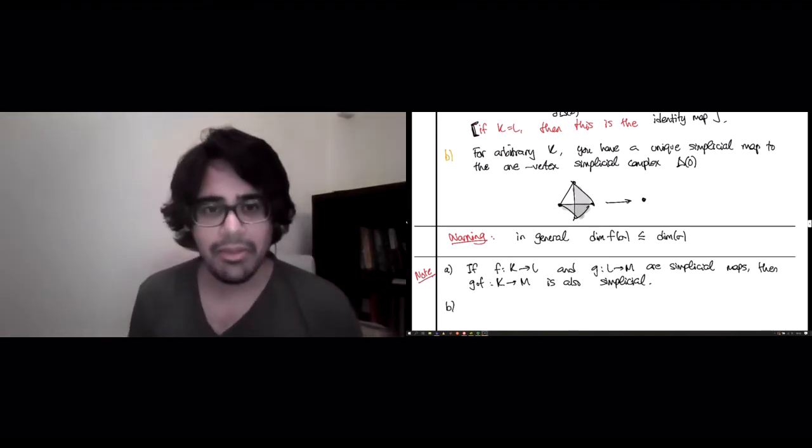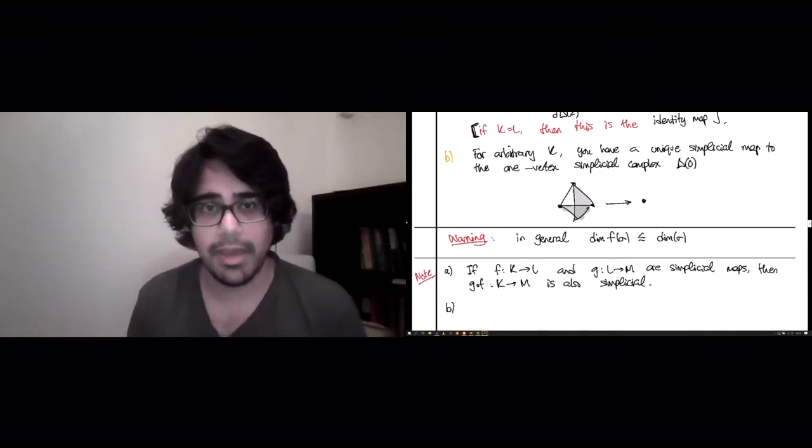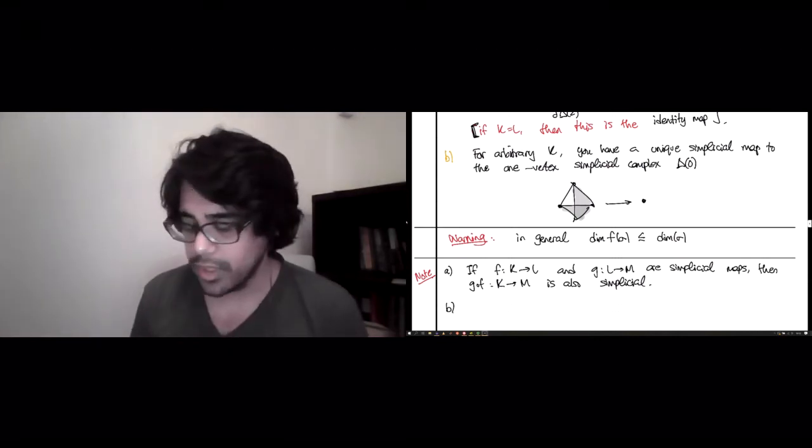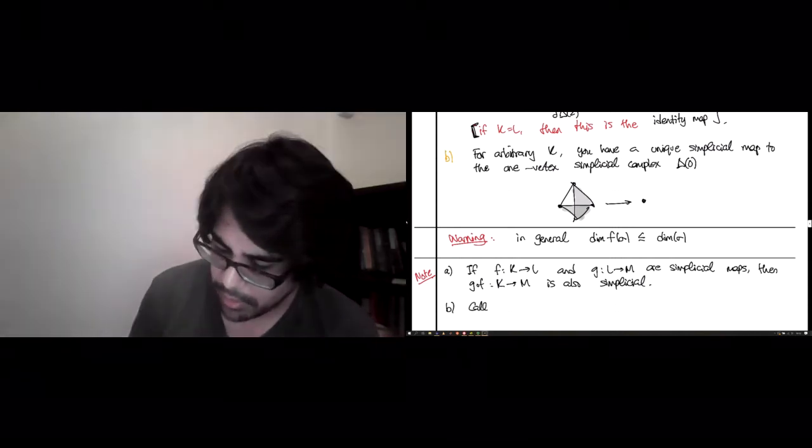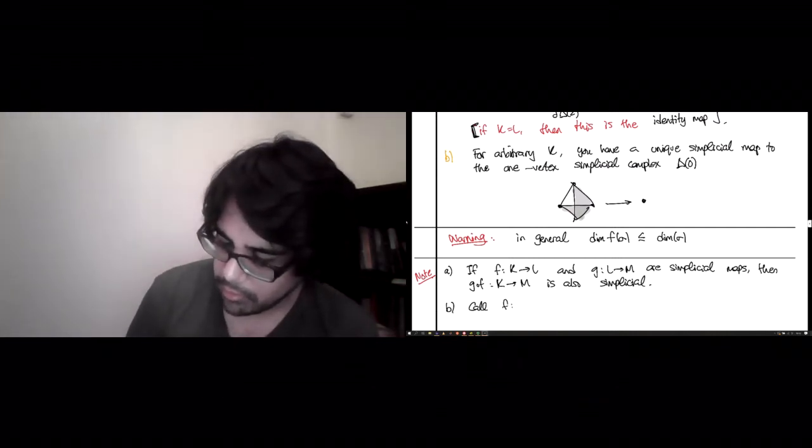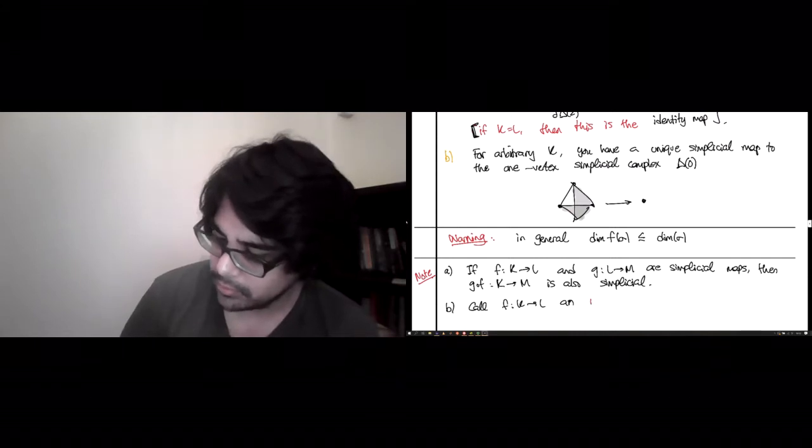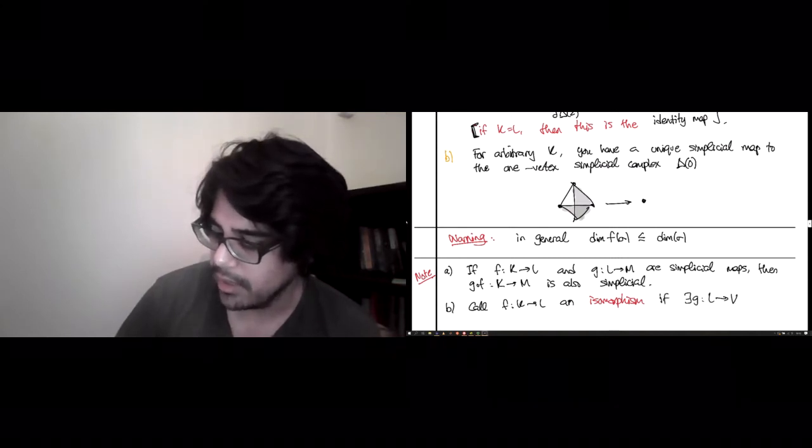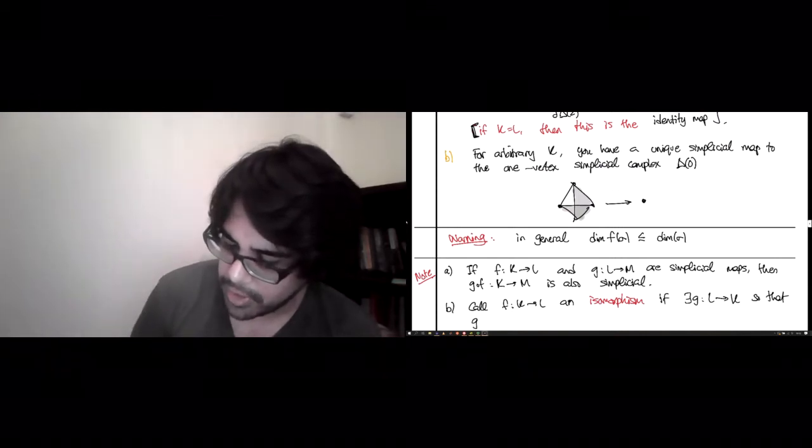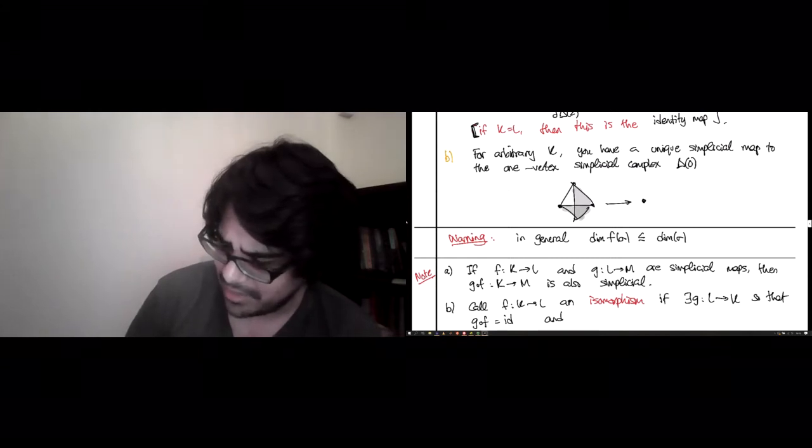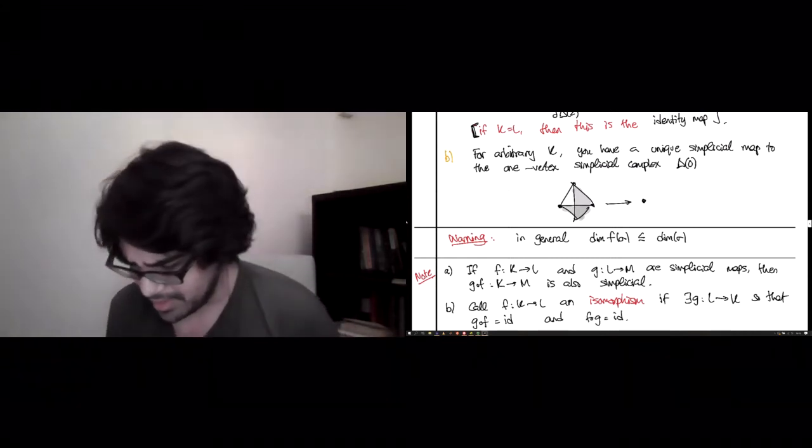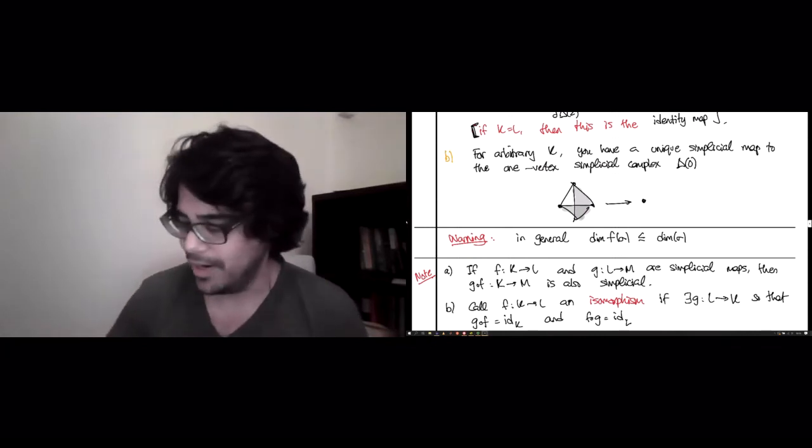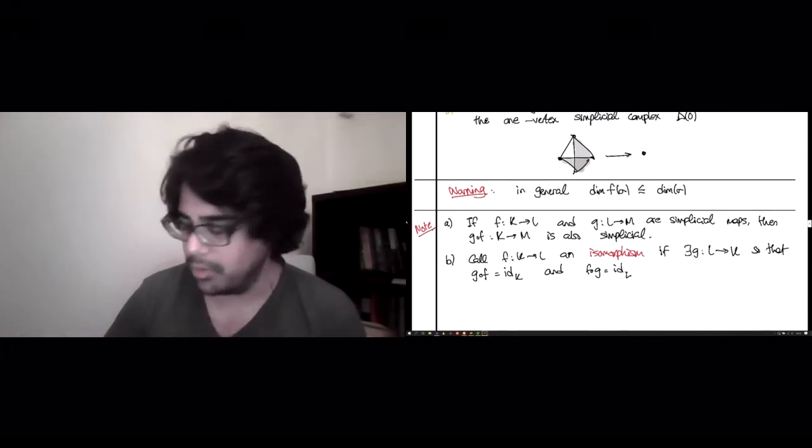And B, now that you can compose and you have a notion of what the identity map is, it's just an inclusion of K into itself, as described above, you can define isomorphisms. So call F from K to L an isomorphism if there exists a backward map, simplicial, of course, L to K, so that G composed F is the identity on K, and F composed G is the identity on L. Of course, there's a 50% chance that I've screwed it up, so it's your job to make sure that this is the way it should be, and not the other way around.